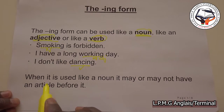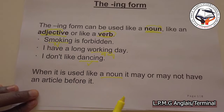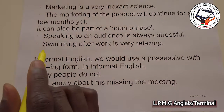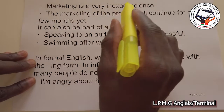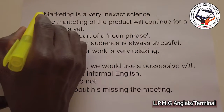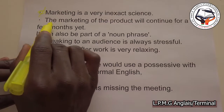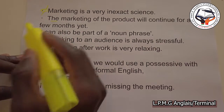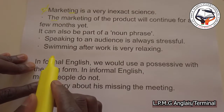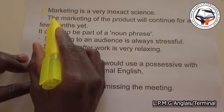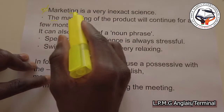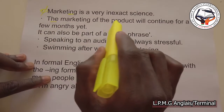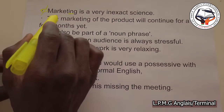When the ING form is used like a noun, it may or may not have an article. 'Marketing is a very inexact science' — here we have no article. 'The marketing of the product will continue for a few months yet' — here we have an article. So we can use the ING with a noun, with or without an article.